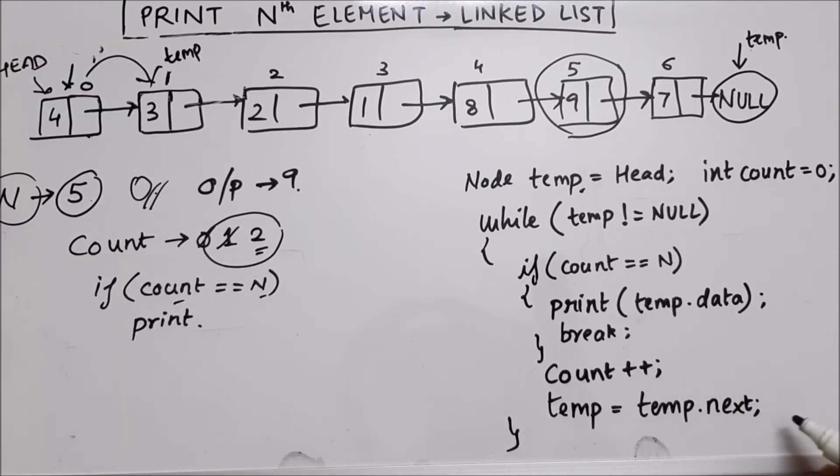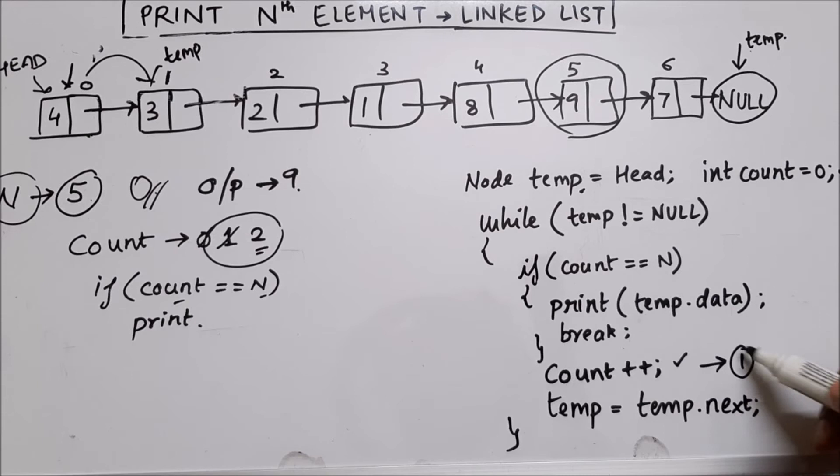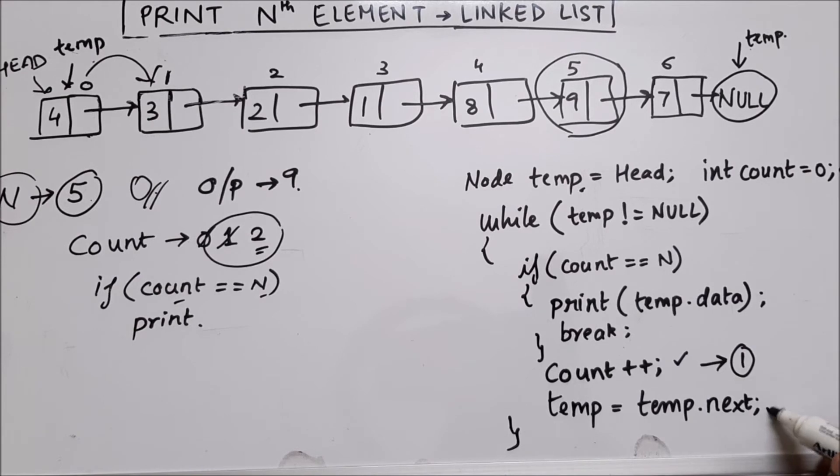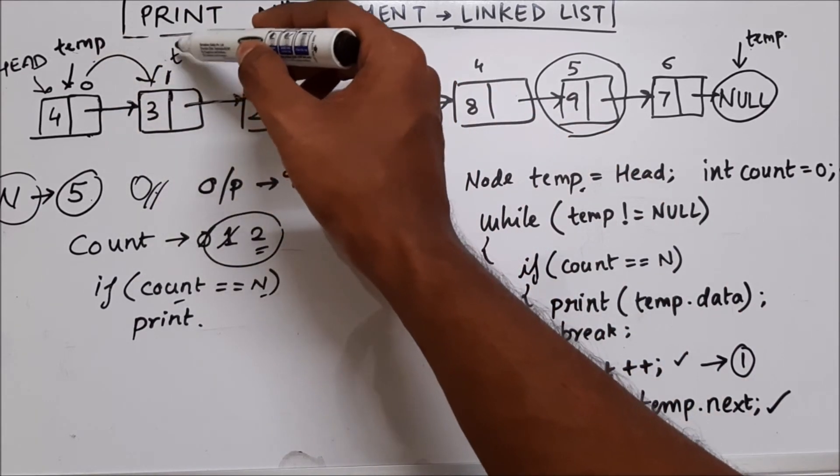So you see what we are doing here, we are incrementing count by one. So initially count was zero. Now it will become one. Now in this line, what we are doing, we are making temp to move from, in this line, what we are doing, we are making temp to move from this node to this node.